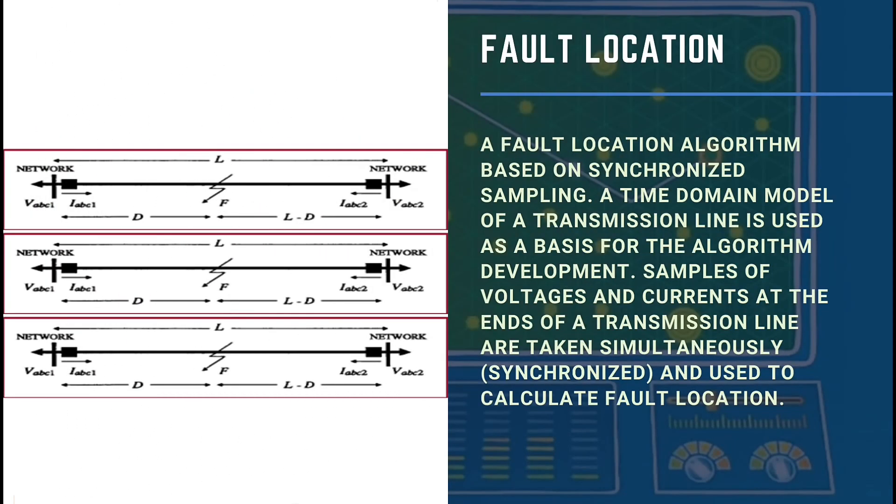Fault location: A fault location algorithm based on synchronized sampling uses a time domain model of a transmission line as a basis for the algorithm development. Samples of voltages and currents at the ends of a transmission line are taken simultaneously, synchronized, and used to calculate fault location. Phasor measurement units are installed at both ends of the transmission line, measuring the three-phase voltages and three-phase currents simultaneously.